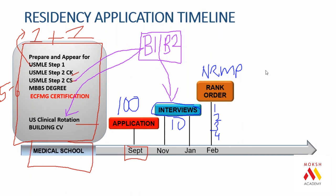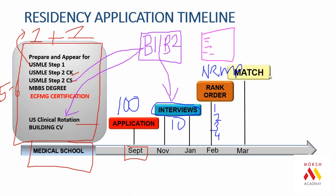Similarly, universities that interview 100 to 200 students also submit their own list. In India we call it a merit list; in America they call it a rank list. You submit your choices, and the results are announced in the month of March — this is called matching. It's an online algorithm: if you like a program and the program likes you, that's when you match.